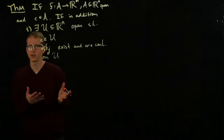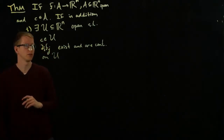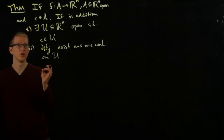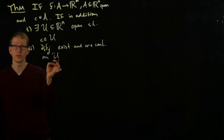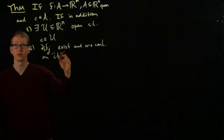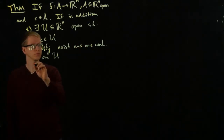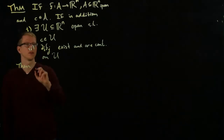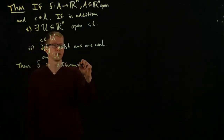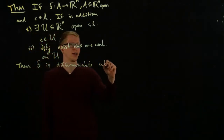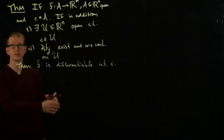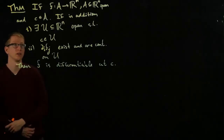The partial derivatives define functions on U — we should be sure we understand why. If we know that the partial derivatives exist, we can vary the point X, and as we vary the point it makes sense to ask whether these functions are continuous. Then F is differentiable at C. By the previous theorem, if F is differentiable, its differential at C is expressed in terms of the partial derivatives of F.